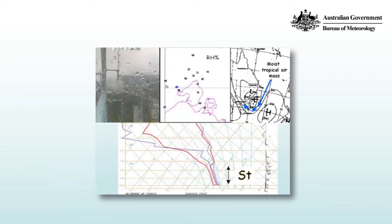Normally you wouldn't expect a southerly airstream over Melbourne to be quite that humid. But in this particular case, because there's an advection of a warm moist tropical air mass, that results in this very humid, near-saturated air mass producing the low-level stratus.